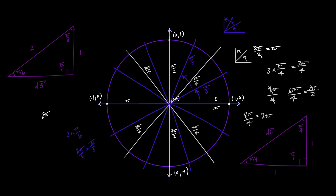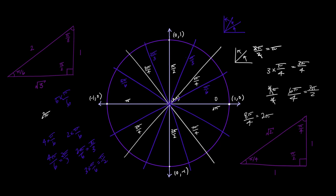So that label is pi over 3. Going one more gives 3 pi over 6, which lands on pi over 2, reaffirming that result. One more gives 4 pi over 6, which reduces to 2 pi over 3 radians — so that label is 2 pi over 3. One more is 5 pi over 6. Going to 6 pi over 6 reduces to pi and confirms what we got before. Then 7 pi over 6.